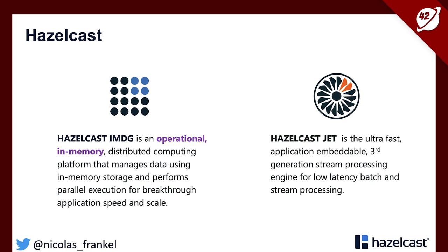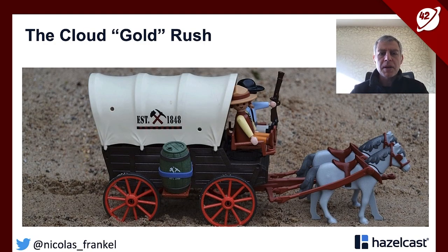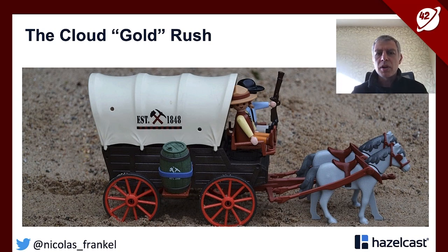Hazelcast has two products. The first one is an in-memory data grid — you can think of it as distributed data structures, where you have a cluster of nodes and you can shard the data over several nodes or replicate it. The other one is an in-memory stream processing platform. Today I will talk to you about the cloud. There is no denying that today everybody goes to the cloud — you can think about it as a sort of gold rush. There are good reasons to migrate to the cloud, and there are not so good reasons.